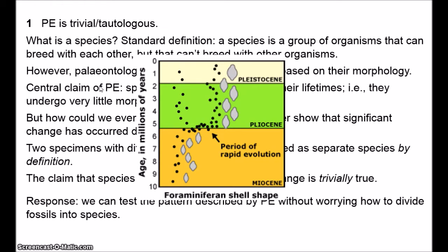Levington and Simon do suggest an important point — that we have to be careful when judging stasis in punctuated equilibrium. But it's far too strong to say that the theory is trivial. This kind of pattern — rapid change followed by stasis — is obviously not trivial. It's clearly a substantial claim about the world to say that this is the kind of pattern of macroevolution.